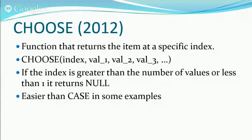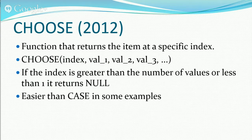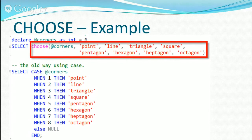The CHOOSE function, also introduced in SQL Server 2012, returns an item at a specific index from a list. You give it an index integer and a list of values; it returns the value at that position. If the index is greater than the number of values or less than 1, it returns null. Using it for the polygon example: CHOOSE(corners, 'Point', 'Line', 'Triangle', 'Square', 'Pentagon', 'Hexagon') — smaller and cleaner than the equivalent CASE statement.